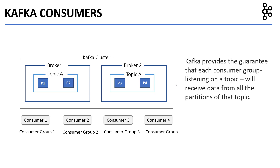So in this case, consumer 1 will receive data from all four partitions of topic A. Consumer 2 will also receive data from all four partitions of topic A. Consumer 3 will also receive data from all four partitions of topic A. And similarly, consumer 4 will also receive data from all four partitions of topic A.